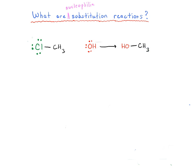Let's start off with some really basic nucleophilic substitution reactions. This first nucleophilic substitution reaction is between methyl chloride, or chloromethane, CH3Cl, with a hydroxide ion, OH⁻, and it's giving us CH3OH as a product, as well as Cl⁻.